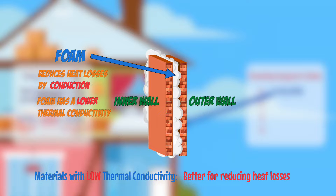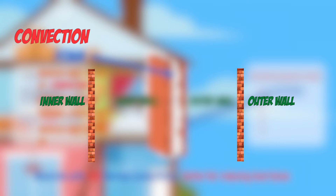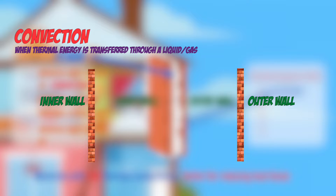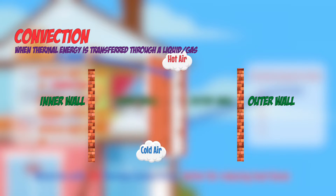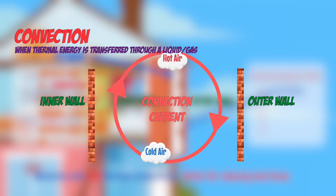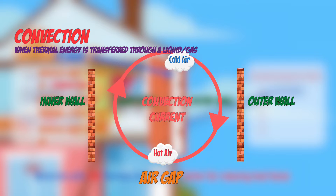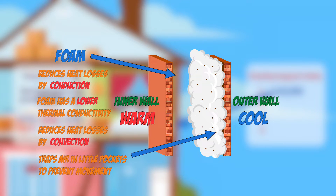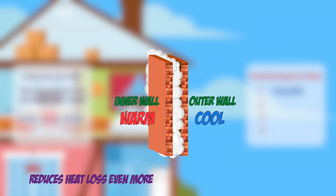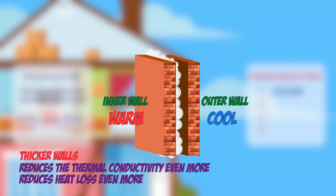Foam also reduces energy losses due to convection. Convection is the process where thermal energy is transferred through a liquid or gas, where the particles are free to move. When a liquid or gas has an area that's warmer, it becomes less dense and starts to rise above the cooler regions, leading to a movement of the substance which spreads the heat energy — this movement is known as a convection current. In the cavity walls, air can experience convection, moving hot air from inside the house to the outside. By adding foam in the gap, you trap the air in little pockets and prevent them from moving, stopping the convection current from spreading the heat energy away.